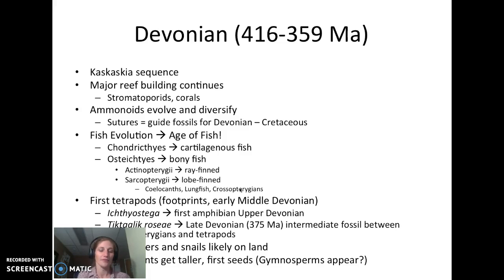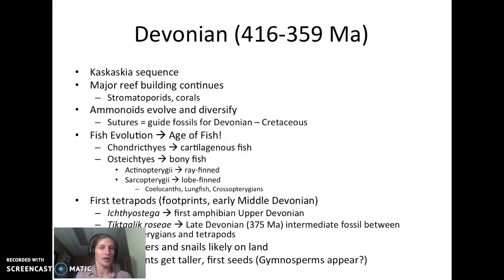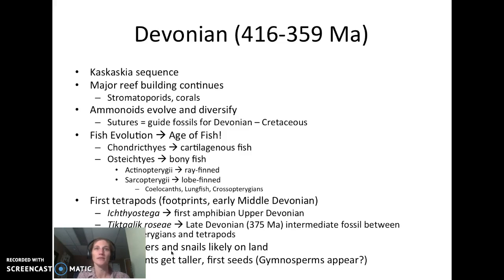During the Devonian we have a lot of armored fish showing up — Dunkleosteus is a really cool example. We see our first tetrapods: the first footprints appear in the middle Devonian; Ichthyostega, the very first known amphibian, shows up in the upper Devonian; and Tiktaalik, dating to about 375 million years ago, is an intermediate fossil between the crossopterygians and tetrapods — those four-limbed critters living on land. We also have insects, spiders, and snails living on land, and vascular plants growing from small forms to much taller tree-sized things.